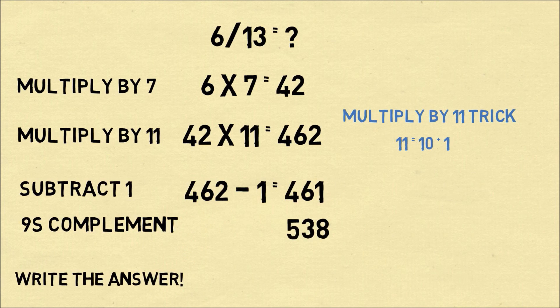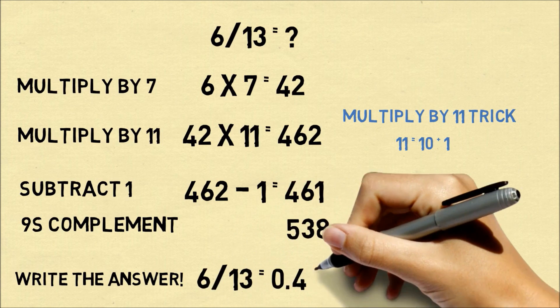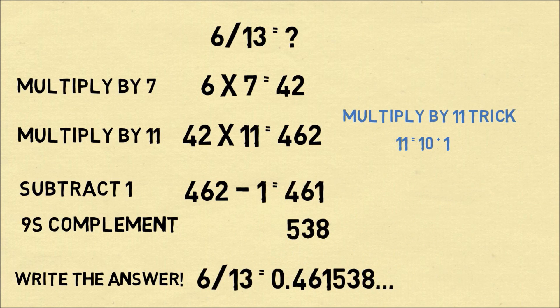So we now have all the digits of the answer in order. So 6 divided by 13 is equal to 0.461538 and these six digits repeat over and over again.